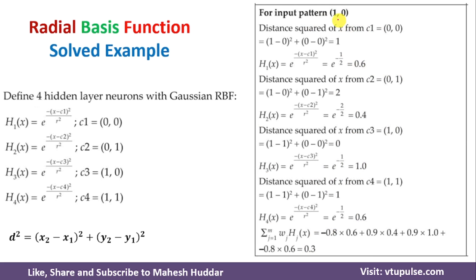Similarly, for the third input pattern 10, we calculate h1(x), h2(x), h3(x), and h4(x) using the same approach as the previous two steps, then multiply by the weights to get the output at the output layer neuron. In this case, we again get the value 0.3.